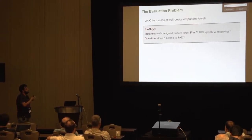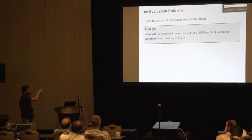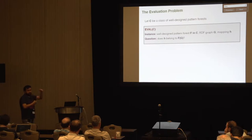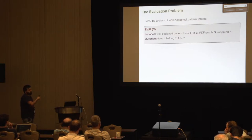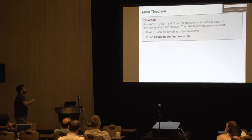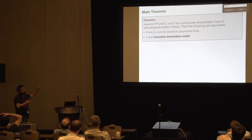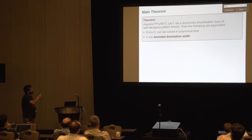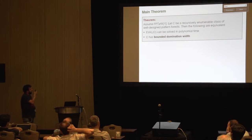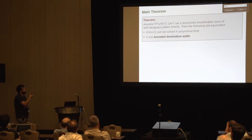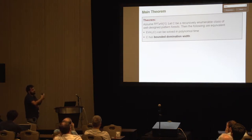The main computational problem we consider is the evaluation problem: we have a fixed class C of pattern forests, and given a pattern forest F in C, an RDF graph G, and a mapping h, the question is whether h is in the answer of F over G. The main theorem states that, assuming FPT ≠ W[1] — a standard assumption from parameterized complexity — a recursively enumerable class C of pattern forests has the evaluation problem in P if and only if C has bounded domination width.